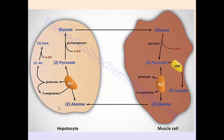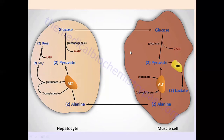When the amino group is removed from alanine in the liver, it is transferred to oxoglutarate. The oxoglutarate takes up the amino group from alanine and becomes glutamate. Alanine, having lost its amino group, becomes pyruvate. The glutamate formed can accept more amino groups from other amino acids through further transamination reactions. So through this process, alanine has been converted back into pyruvate.